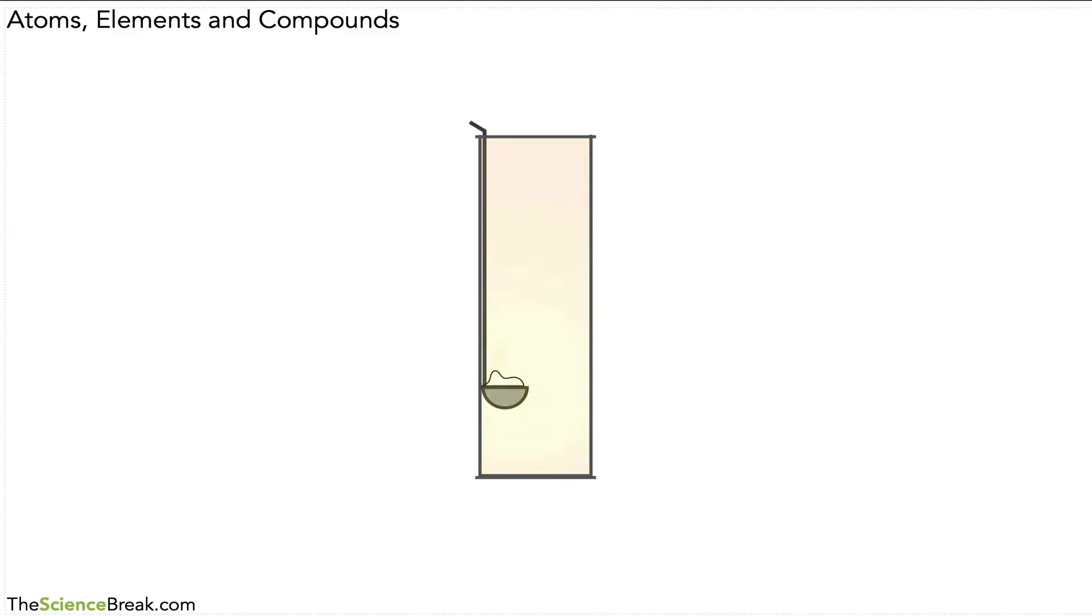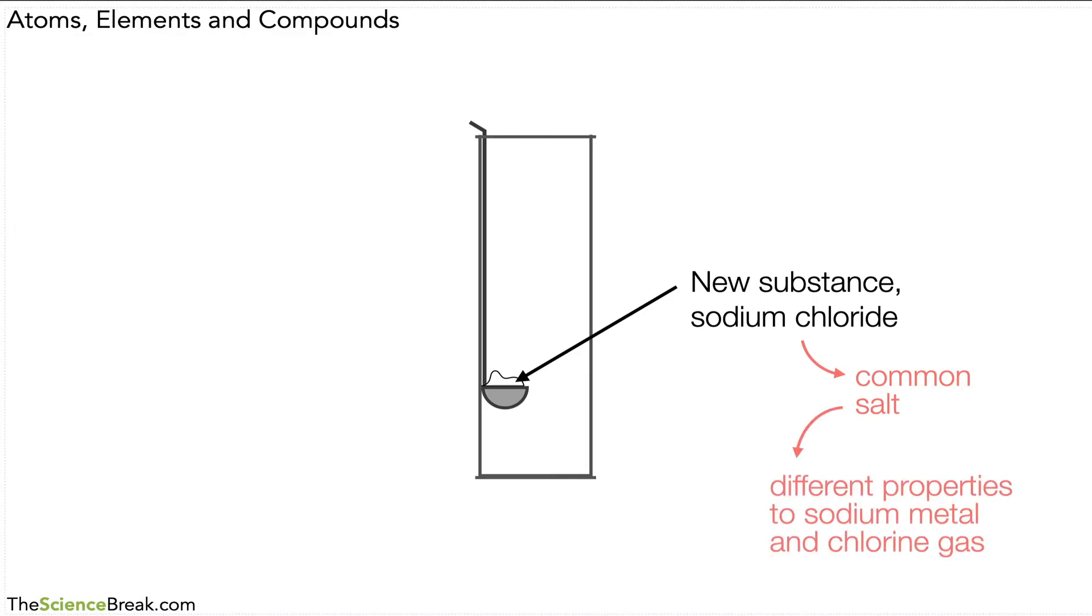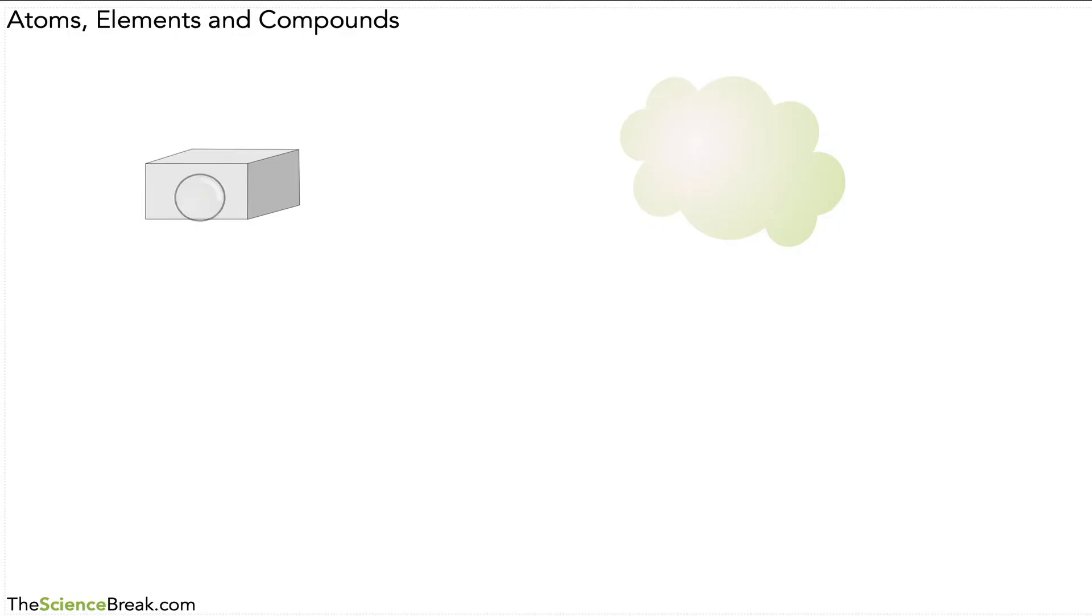Very bright orangey yellow colors as they react and as the reaction finishes we will be left with a new substance which is sodium chloride. Now that new substance is actually common salt, the kind of salt you put on your food. So the features of that solid that's produced or the properties are very different to the sodium metal and the chlorine gas that we used to react together to make it. And that's an important thing to remember about making compounds in chemical reactions.